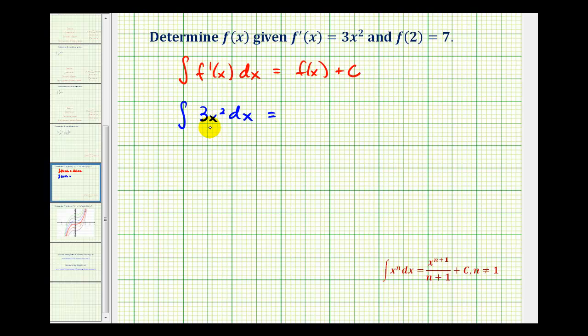So this anti-derivative would be 3 times x³ divided by 3 plus c. These 3s simplify out, so we're left with x³ plus c.